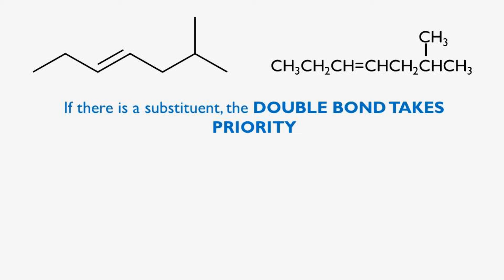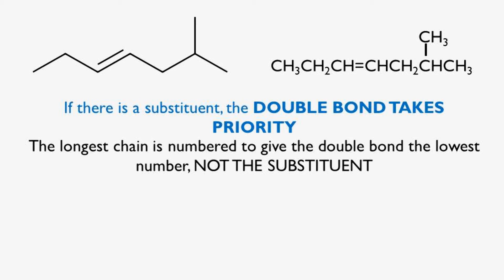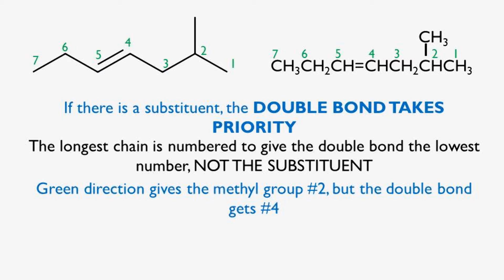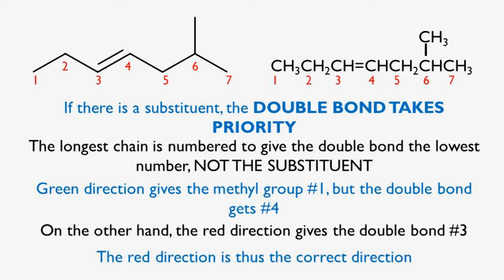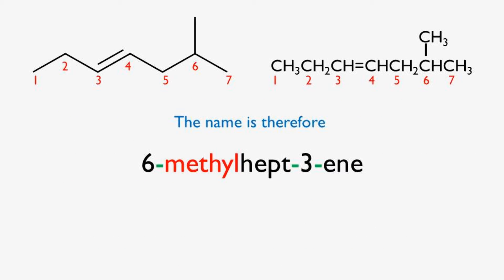Rule four. If there is a substituent, the double bond takes precedence. The longest chain is numbered to give the double bond the lowest number, not the substituent. It doesn't matter what substituent we have or how many — we always look for the longest chain and number it in a direction that gives the double bond the smallest number. The green direction gives the double bond number four and the methyl substituent number two. The red direction gives the double bond number three, but the methyl substituent number six. Therefore, the red direction is correct because it gives the double bond the smaller number, even though the methyl group became a very high number. We don't care about the substituents — we just want the double bond to have the smallest number possible. This molecule is called 6-methyl-hept-3-ene.